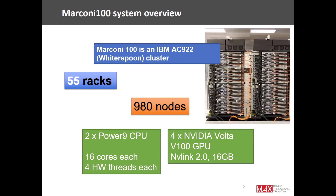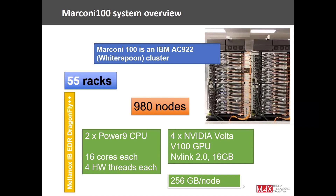More importantly, each node has four NVIDIA Volta GPUs, each with 16 gigabytes of its own memory, and the GPUs are connected through a network called NVLink. In total, each node has 256 gigabytes of memory, and all nodes are connected with an InfiniBand network called Mellanox EDR, which has a particularly efficient architecture called the Dragonfly.